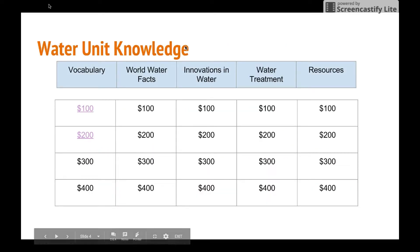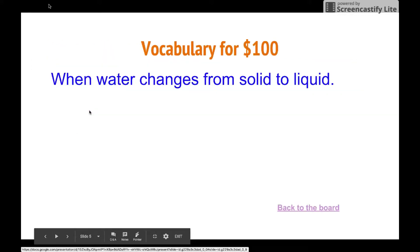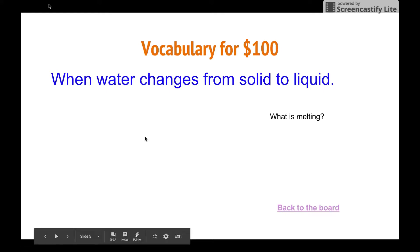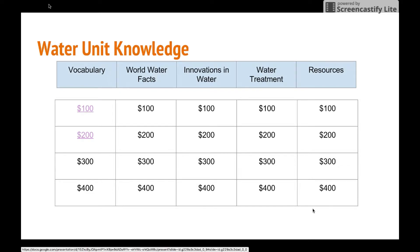So I've created a basic board on a Water Unit. When you click on the 100, it takes you to a question. One click brings up the answer — what is melting? — and I have a link to take you back to the board.